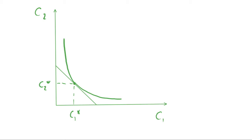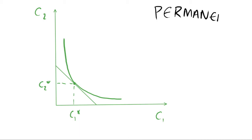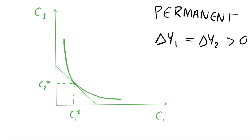Now let's do the same process, but with a permanent income shock. What do we mean by permanent? We have a change in income in period one which is equal to our change in income in period two, and both are positive. A permanent change in income means we're just increasing our income in every period — imagine a salary increase, a raise at work. We show a permanent shift in income as a shift in the budget constraint, but this time it would be a slightly larger shift as we increase income in both periods, not just in period one.